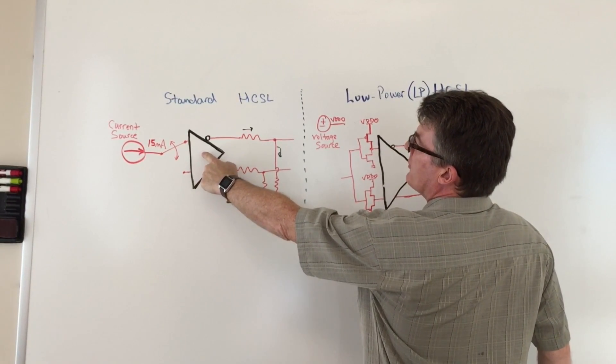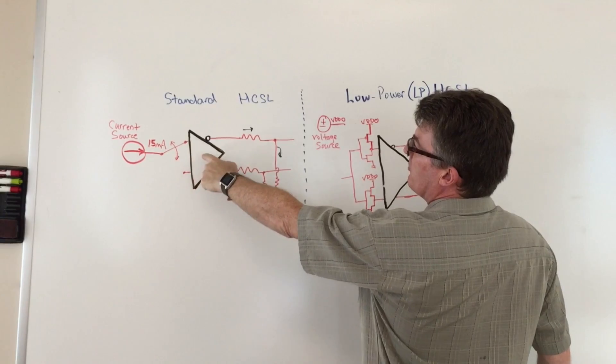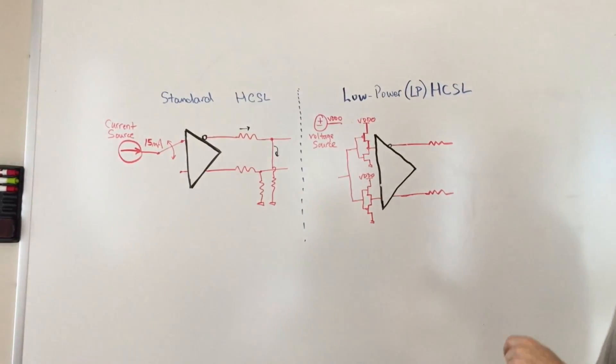for 100 ohm loads. That's roughly from 3.3 volts, which is roughly 50 milliwatts per output, which is kind of high.